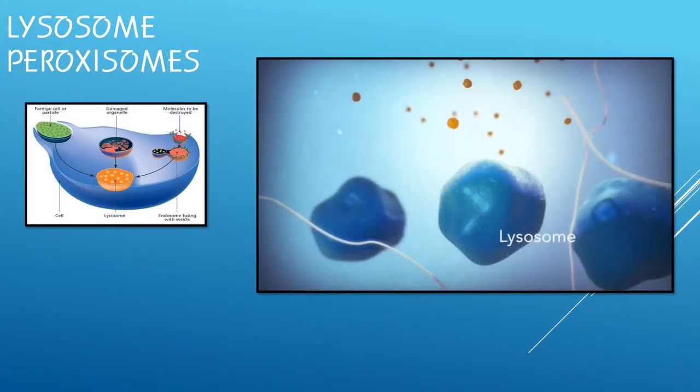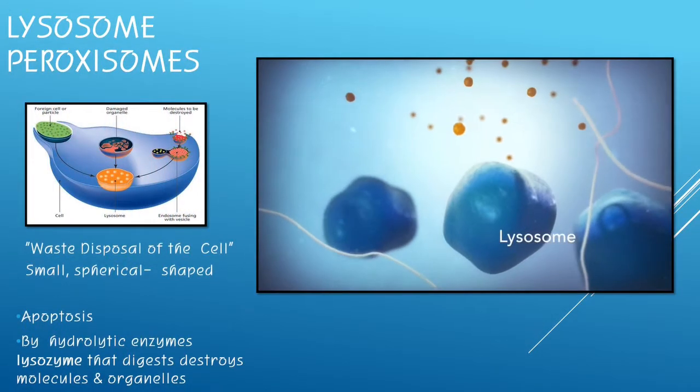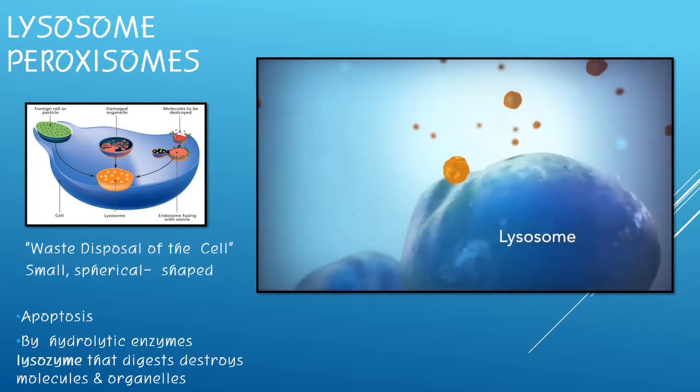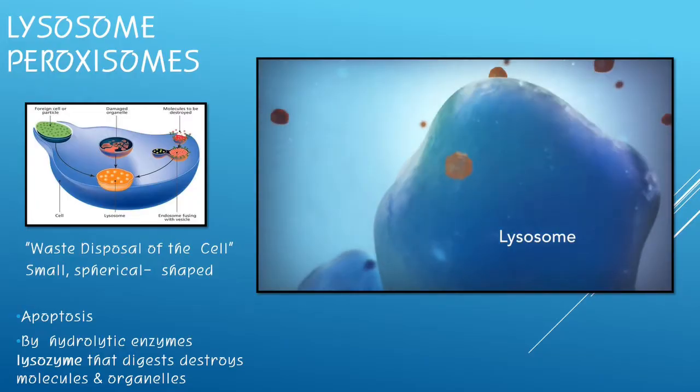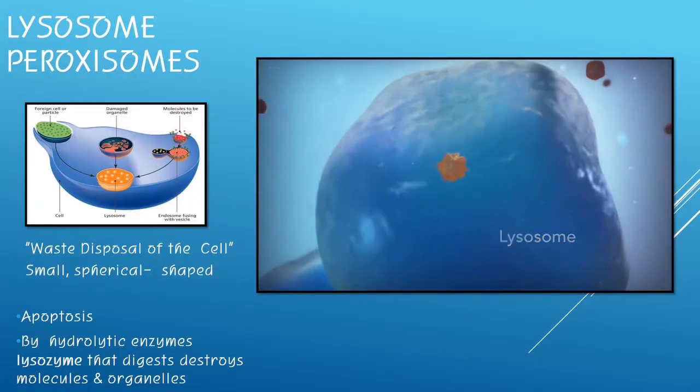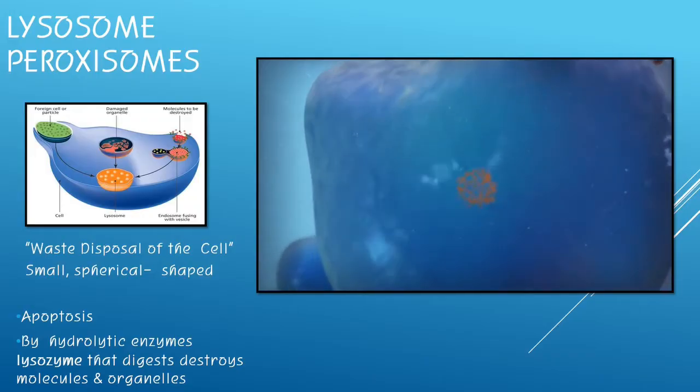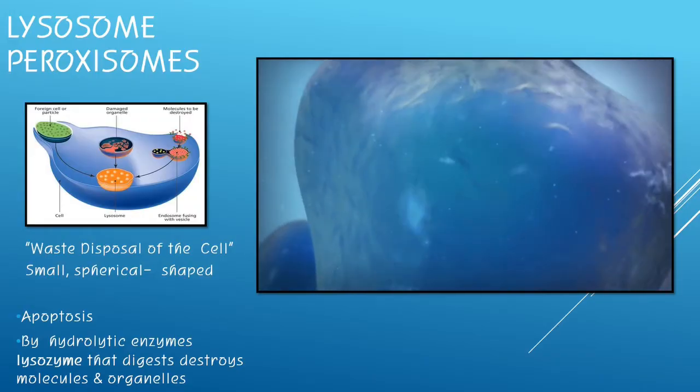The lysosome and the peroxisomes are both called the waste disposal of the cell. They are small, rounded, spherical-shaped structures that contain chemicals such as hydrolytic enzymes that break down or digest molecules and organelles.